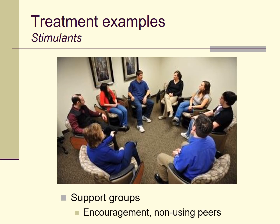As we saw with other drugs, community support can be really helpful for stimulant addiction. Providing encouragement and non-using peers — people to associate yourself with who aren't using the drug — can be really helpful, because if you have a heavy drug problem, it's likely that you've alienated a lot of non-drug-using friends and family members, and the only people you hang out with use drugs. That's a problem. Narcotics Anonymous — NA, a parallel to AA — is a 12-step program designed for drug use other than alcohol, and there are other recovery and support programs helpful for people with stimulant use problems.